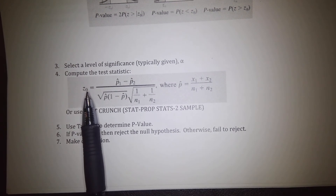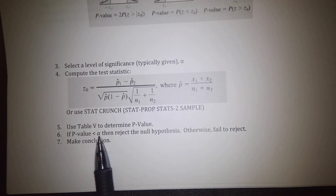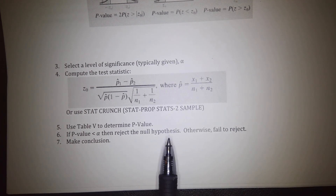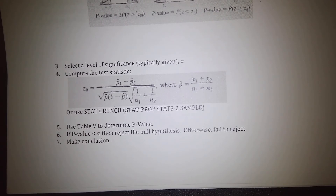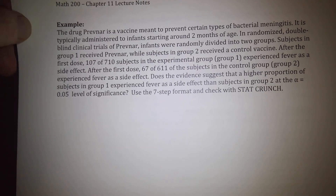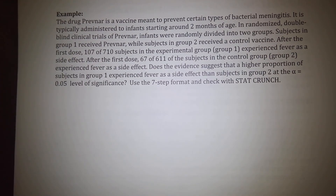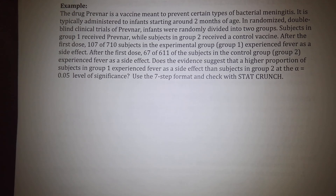We can also use StatCrunch to determine the test statistic by going to Stat > Proportion Stats and using the two-sample approach, which I'll show you after the next example. Then we go to Table 5 to determine the p-value by looking up the z test statistic. If the p-value is less than your level of significance, we reject the null hypothesis; otherwise we fail to reject. Then we state our conclusion.